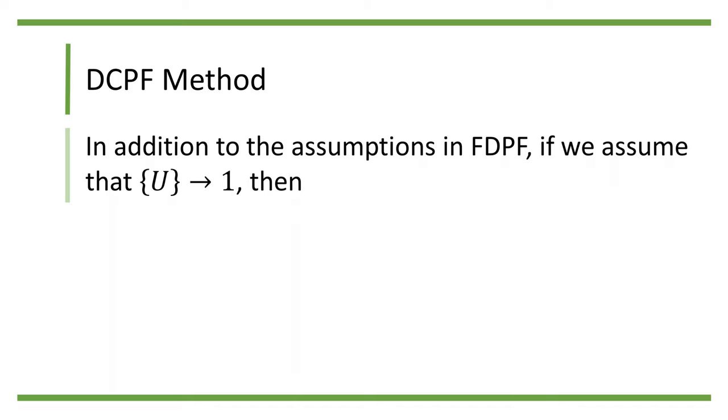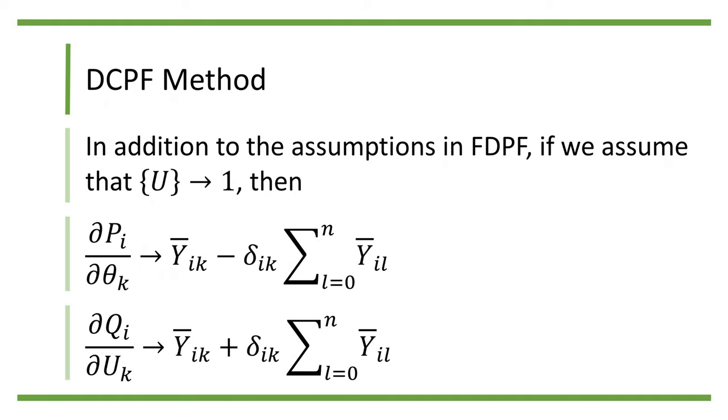For DCPF, we take a step further and assume that all the voltage magnitudes approach 1. Then, partial Pi over partial theta k approaches y bar ik minus delta ik convention l from 0 to n y bar il, while partial Q over partial uk approaches y bar ik plus delta ik convention l from 0 to n y bar il.